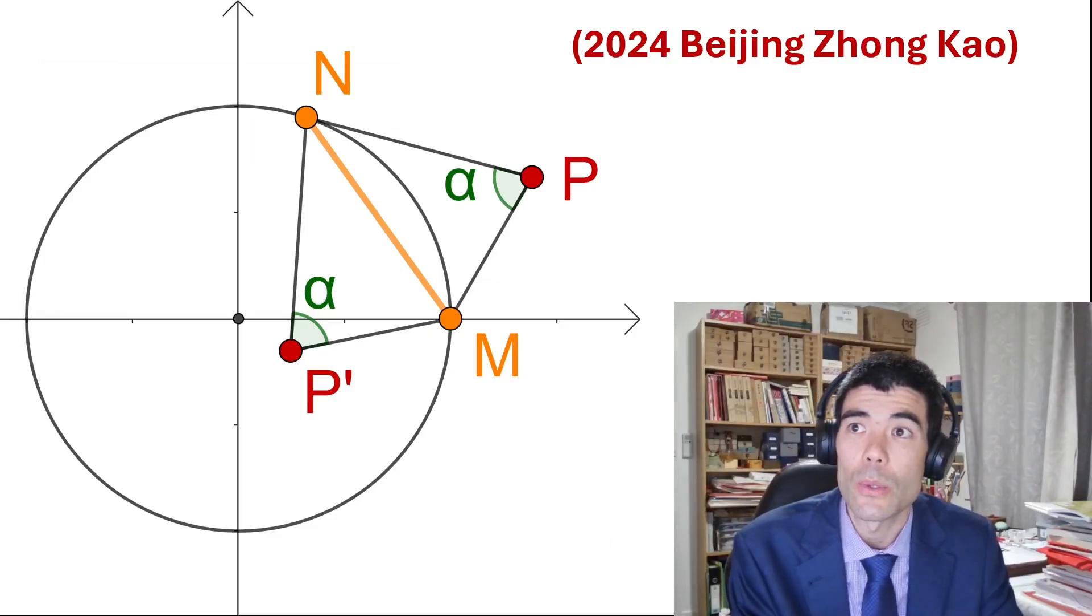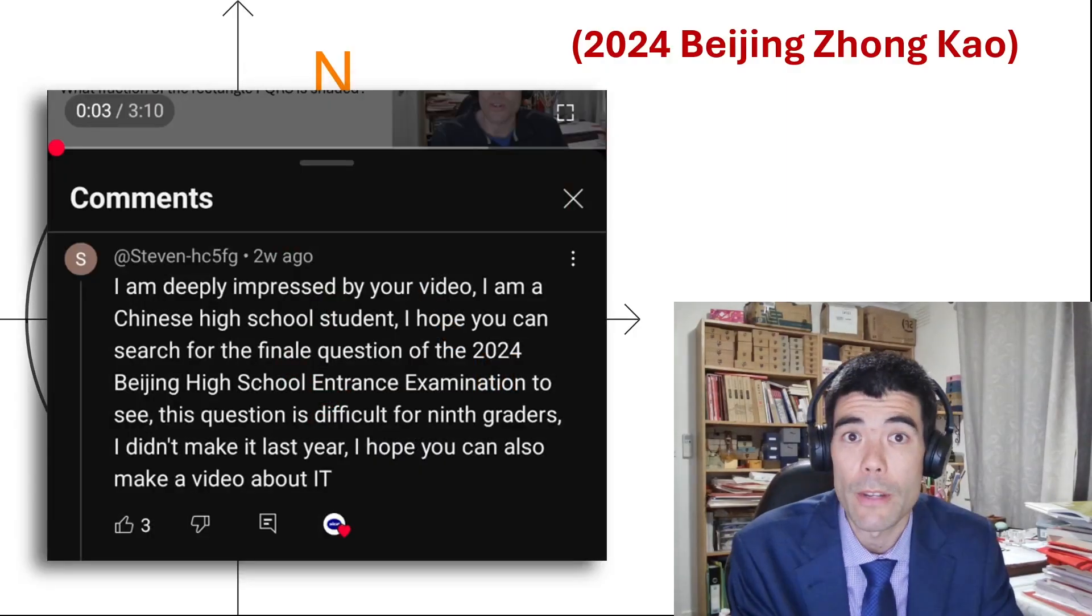The stakes are pretty high because these exams help determine which senior high school a student can attend. In this video we're going to look at the final problem from the 2024 Beijing exam. Thanks to Stephen for recommending this problem.